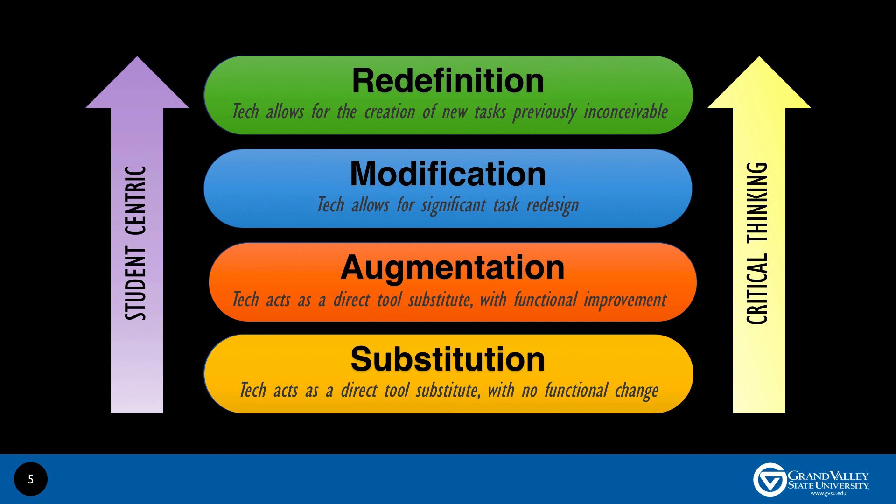The SAMR model provides a useful framework to understand the impact of technology on teaching and learning. A simplified version of the SAMR model is the RAT model, which was described by Hughes, Thomas, and Sharber in 2006. The RAT model was originally developed as a self-assessment tool for pre-service and in-service teachers to increase critical technological decision-making.